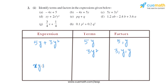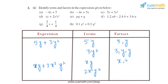Now let's move on to part D. The expression given is XY plus 2X square Y square. The terms are XY and 2X square Y square. The factors of XY are X and Y, as both can divide it completely. Similarly, the factors of 2X square Y square will be 2, X, X, Y, and Y.